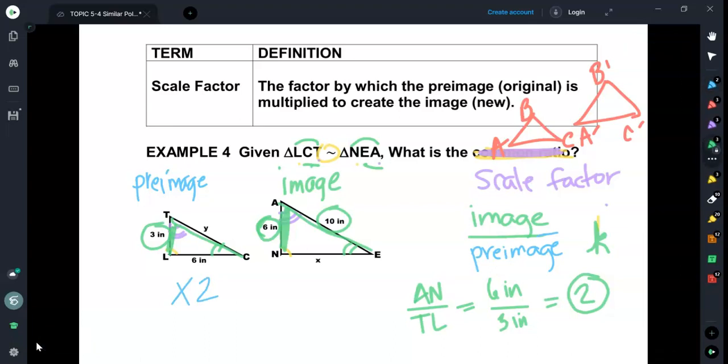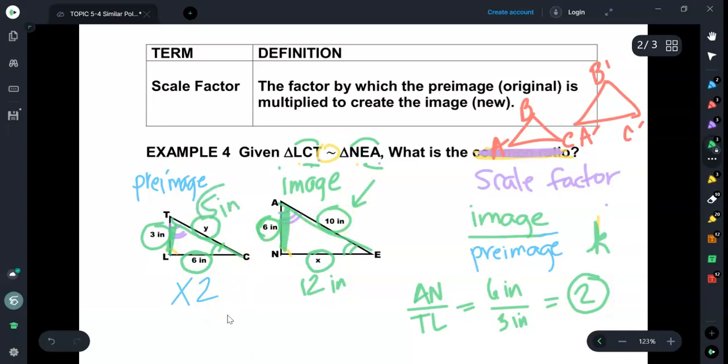So now let's look at the rest of the sides. If this is 6, what is its corresponding side going to be? Well, what's 6 times 2? 12. So that must be 12 inches. I don't know this one, but I know this one. And I know that the one I'm pointing to right now was multiplied by 2.